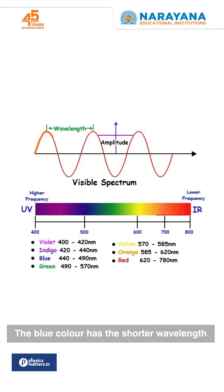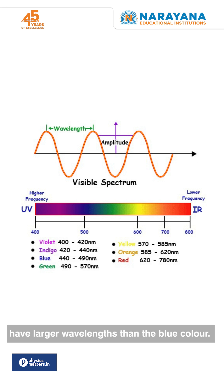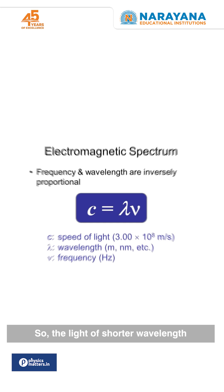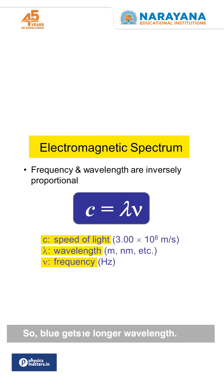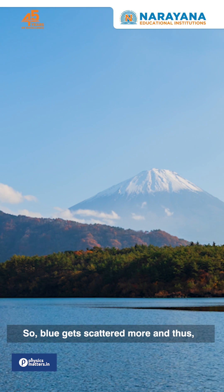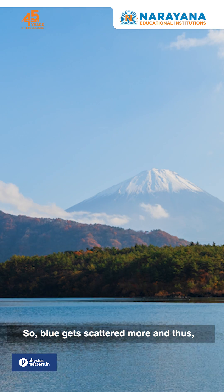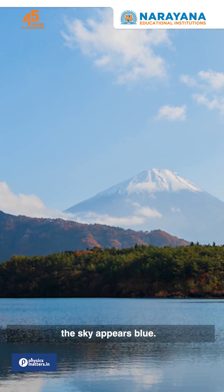The blue color has the shorter wavelength, while colors like red, orange, and yellow have the largest wavelengths. The light of shorter wavelength gets scattered more than the light of longer wavelength. So blue gets scattered more, and thus the sky appears blue.